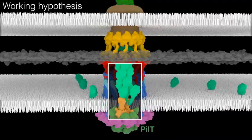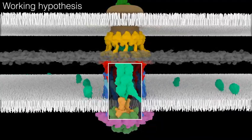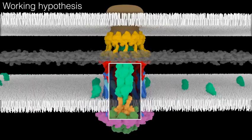PilT likely rotates PilC in the opposite direction, slipping PilA subunits back into the membrane.